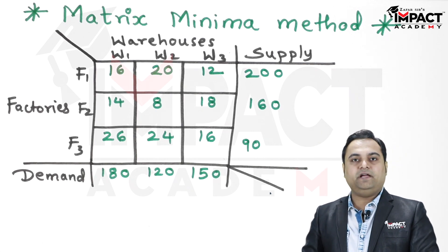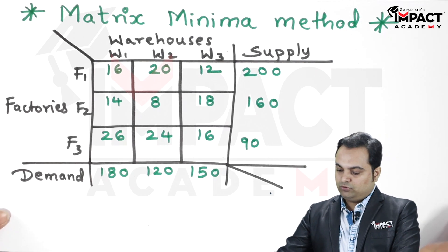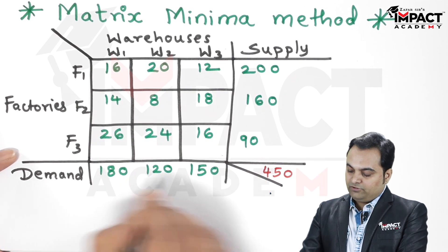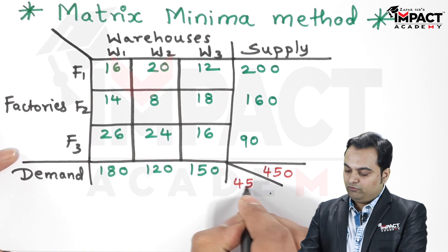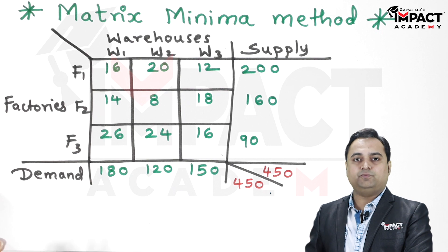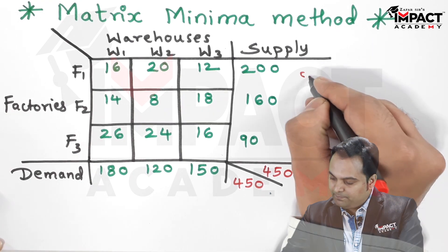When we add up the values, the total supply is 450 and the total demand also comes out to be 450. Since both are equal, the problem is called balanced transportation type.